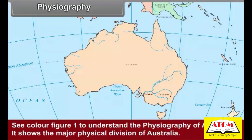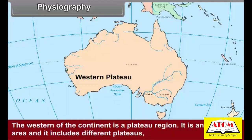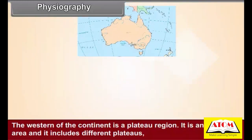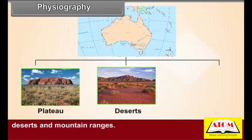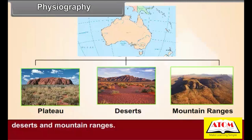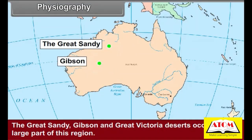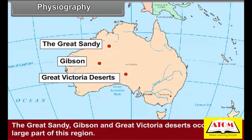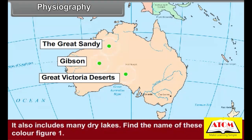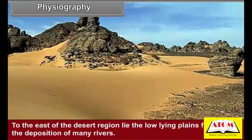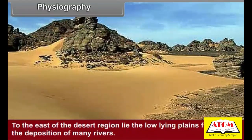The western part of the continent is a plateau region. It is an extensive area and it includes different plateaus, deserts, and mountain ranges. The Great Sandy, Gibson, and Great Victoria deserts occupy a large part of this region. It also includes many dry lakes.